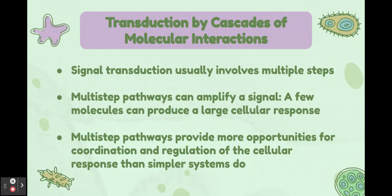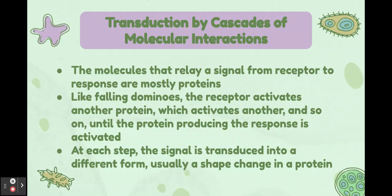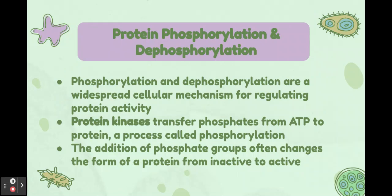Transduction by cascades of molecular interactions: signal transduction usually involves multiple steps. Multi-step pathways can amplify a signal — a few molecules can produce a large cellular response. They also provide more opportunities for coordination and regulation. The molecules that relay a signal from receptor to response are mostly proteins. Like falling dominoes, the receptor activates another protein, which activates another, and so on, until the protein producing the response is activated. At each step, the signal is transduced into a different form, usually a shape change in a protein.